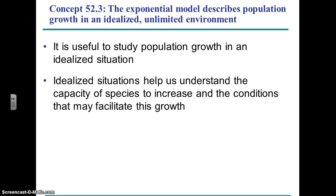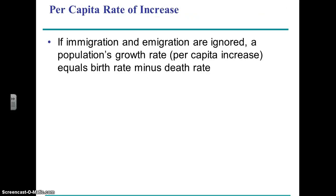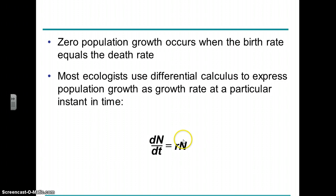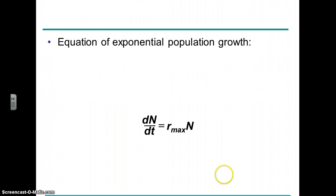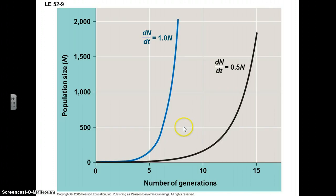Let's talk about population growth. The simplest way to think about it is the exponential model, or exponential increase. The formula says that for any given time period, the change in numbers is a function of the reproductive rate and the number of individuals you have. This leads to a J-shaped curve. With higher reproduction, it's a steeper curve and shoots up faster than with lower reproduction.